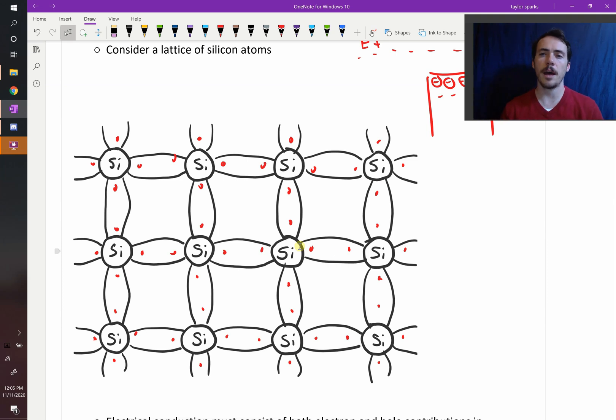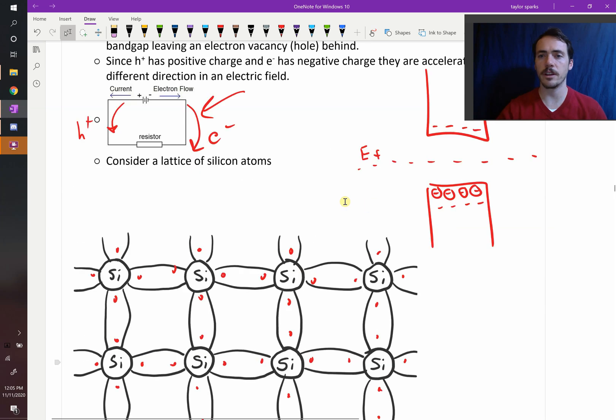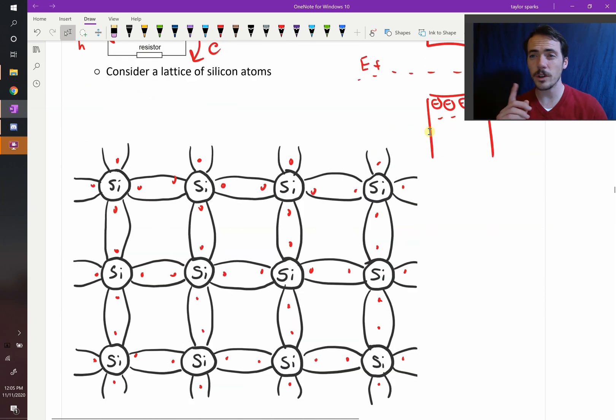So what has to happen in order for us to get conduction? We had to promote one of these things from its filled shell where it was happy, this filled valence band. We had to promote it across the band gap up to the conduction band.